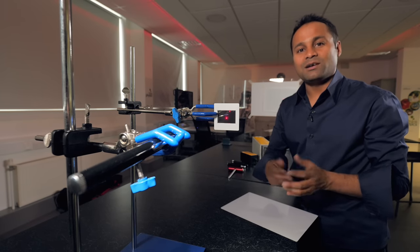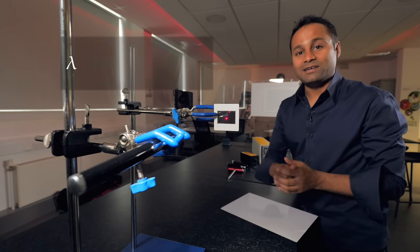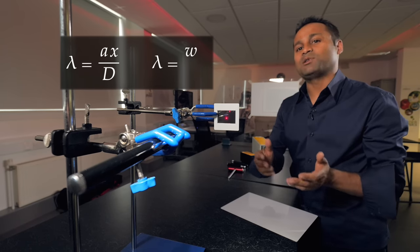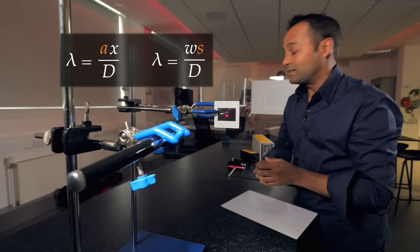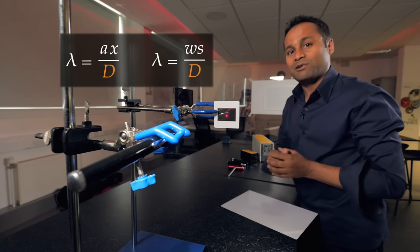Depending on which exam board they're with, they'll either use the equation lambda equals ax over d or lambda equals sw over d, both of which relate the wavelength to the slit spacing, the fringe separation, and the distance to the screen.